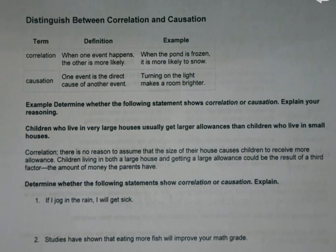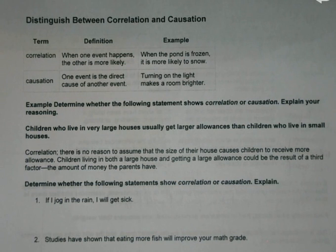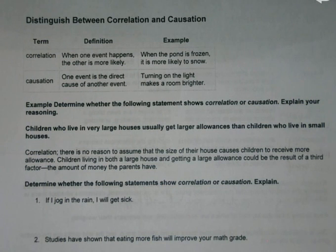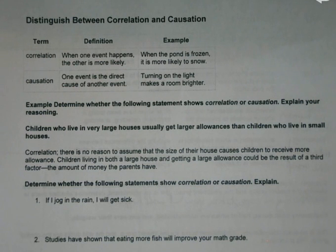Now, correlation and causation — some of you might recognize something similar from geometry class. Correlation: when one event happens, the other is more likely. When the pond is frozen, it's more likely to snow because it's cold out. If you get moisture and it's cold out, you get rain or ice. Does that necessarily mean it will definitely happen? No.